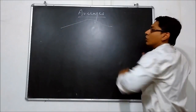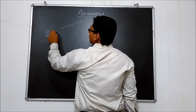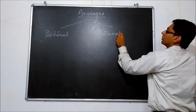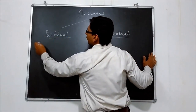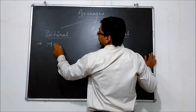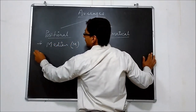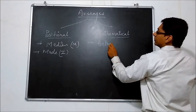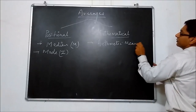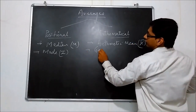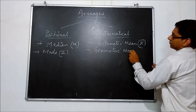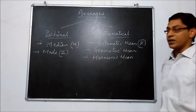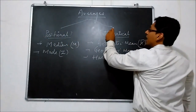There are two types of averages: Positional and Mathematical. In Positional, there are two averages: Median and Mode. In Mathematical averages, there is Arithmetic Mean (x-bar), Geometric Mean, and Harmonic Mean. These are the two types of averages — Positional averages and Mathematical averages.